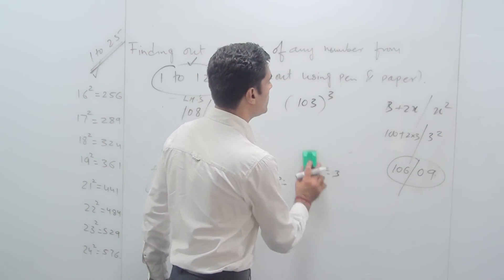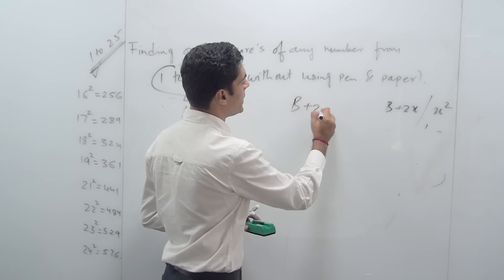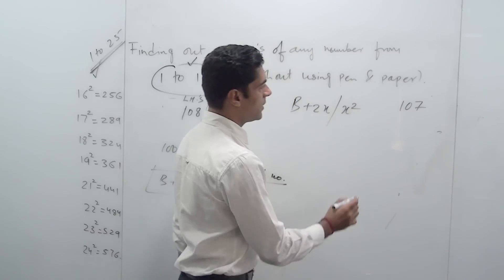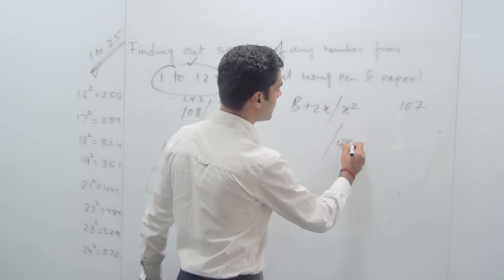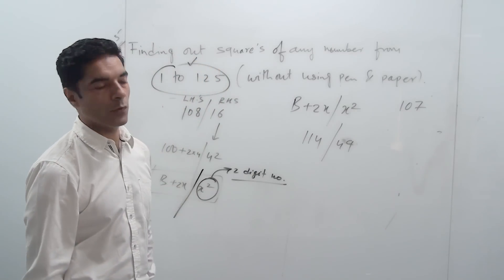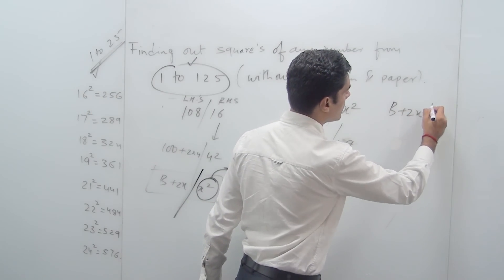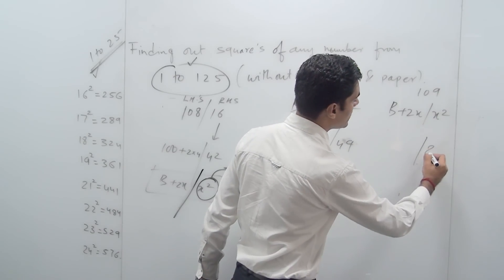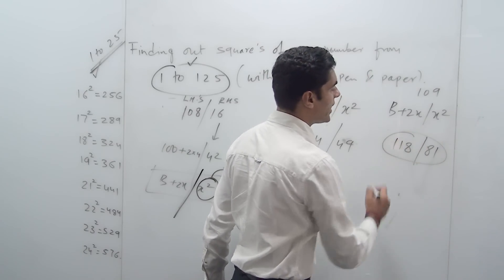Now let's try to do things without using pen and paper. The formula is b + 2x slash x². If I wanted to find the square of 107, my x is 7. 7² is 49, so the answer is 11449. Let's say I wanted to find the square of 109. x is 9. 9² is 81. 9×2 is 18, plus 100 is 118. So the answer is 11881.